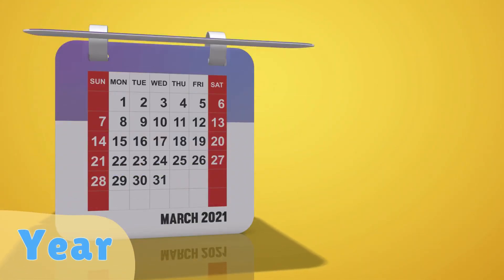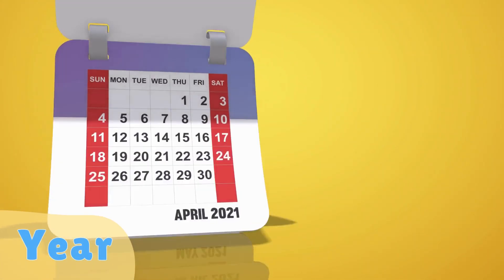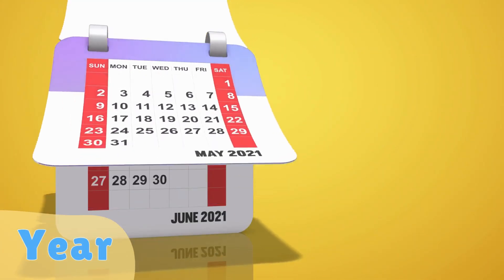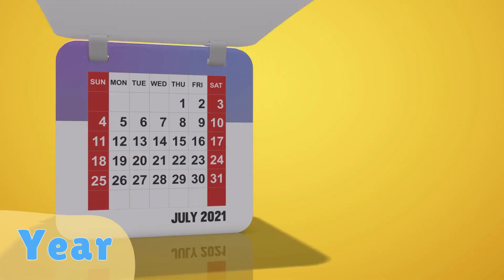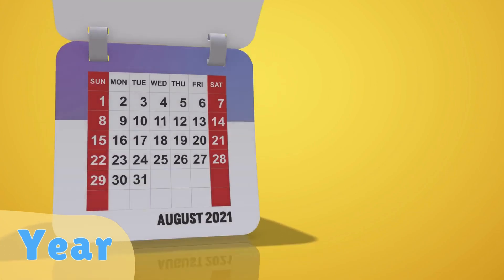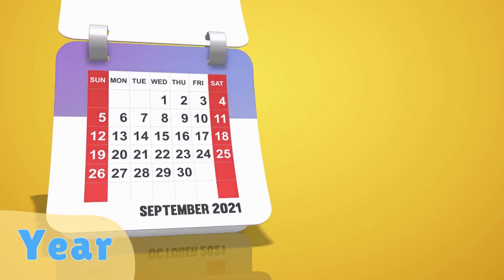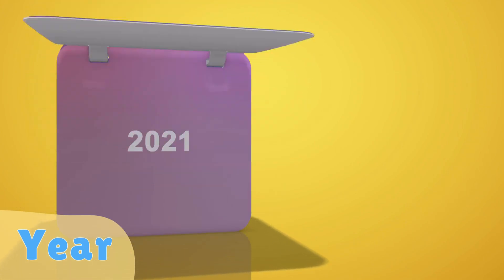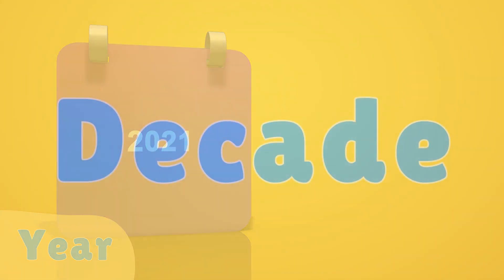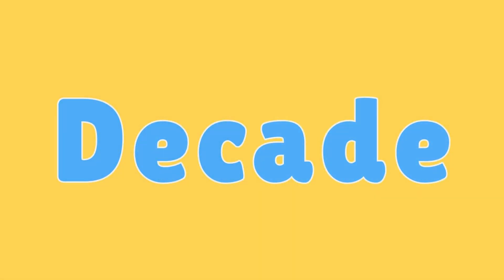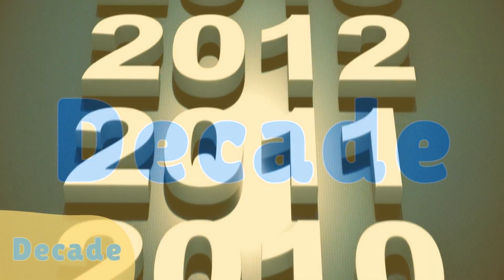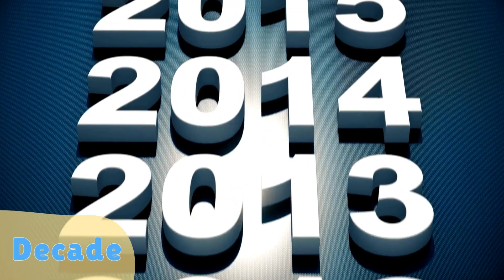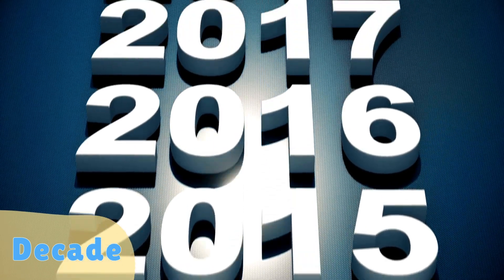Year: a unit of time approximately equal to 365 or 366 days, depending on the calendar year. Decade: a period of 10 years.